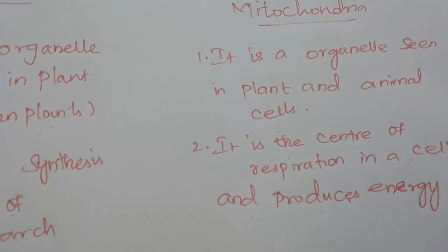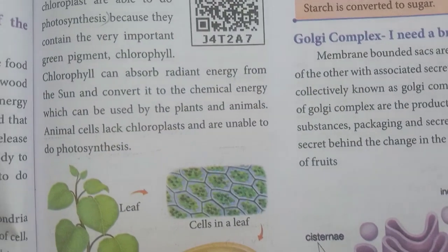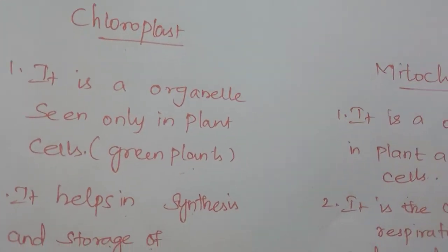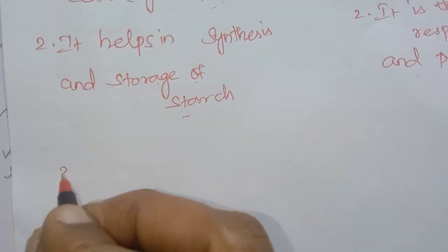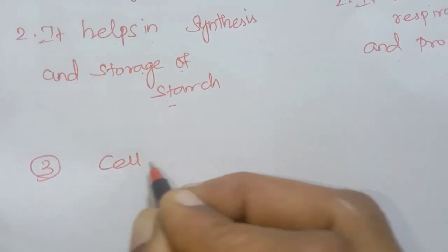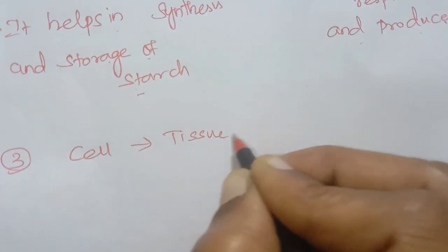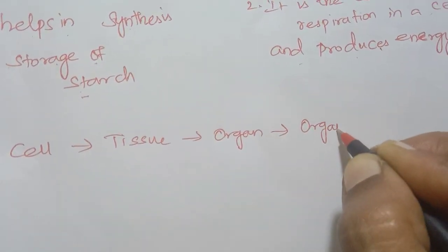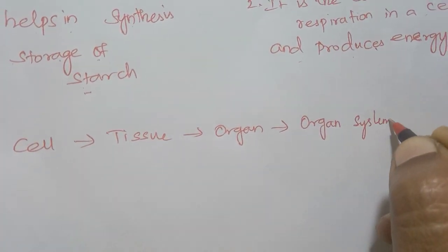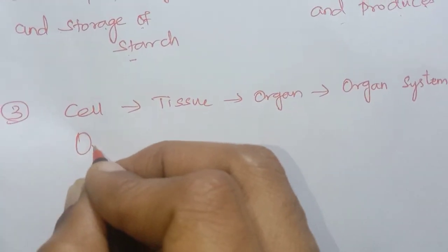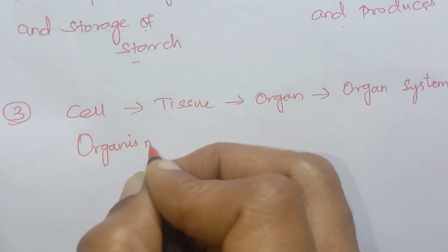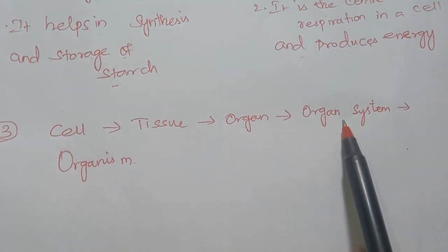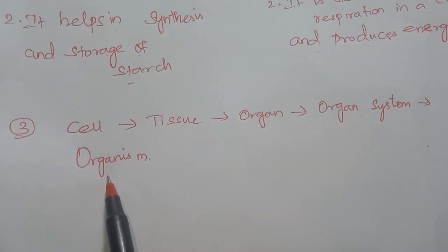Next: Write the correct sequence from cell to organism. The correct sequence is: cell → tissue → organ → organ system → organism.